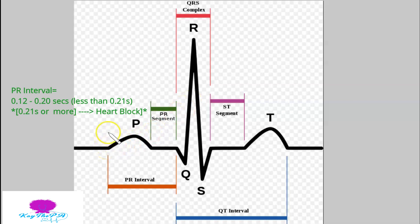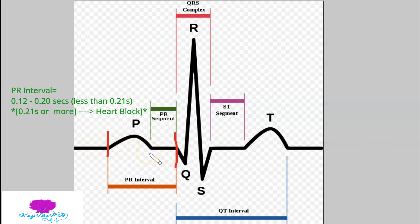The PR interval is the first thing you measure. You measure from the beginning of the P wave to the beginning of the Q. Even though we call it a PR interval, it's technically a PQ interval — we just don't call it that. Typically the measurement is 0.12 to 0.20 seconds. If it's 0.21 or greater, we refer to it as a heart block — first degree, second degree, or even third degree, depending on the situation.